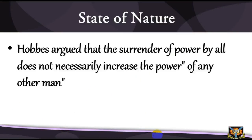Hobbes captures it thus in Sabine and Thorson (1973): 'I authorize and give up my right of governing myself to this man, or to this assembly of men, on this condition, that I will give up my right to him and authorize all his actions in like manner.' Hobbes argued that the surrender of power by all does not necessarily increase the power of any other man — though this argument does not appear quite convincing, as it is a mere attempt to dismiss a priori the argument that the sovereign stands to gain greatly from such a social contract establishing the commonwealth. Hobbes says the laying down of rights can be either by renunciation or by transference. Renunciation connotes indifference as to who benefits, while transference suggests that the rights are intended to benefit certain persons. But not all rights are alienable.